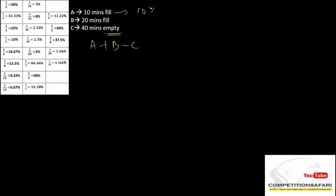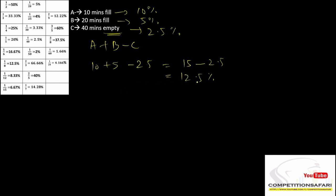Tap A can fill a tank in 10 minutes, tap B can do it in 20 minutes, and tap C is emptying it and can empty the complete tank in 40 minutes. We have to find the total time taken by all three taps to fill the tank completely. We have A plus B minus C — I'm subtracting the work done by tap C because it is emptying the tank, not filling it. So 10 minutes is 10%, 20 minutes is 5%, and 40 minutes is 2.5%. We put them in: 10 plus 5 minus 2.5, which gives 15 minus 2.5 = 12.5%.